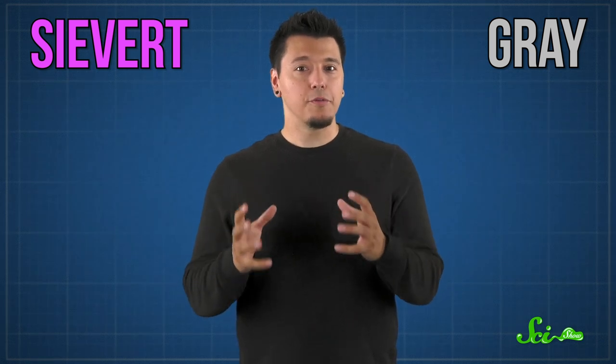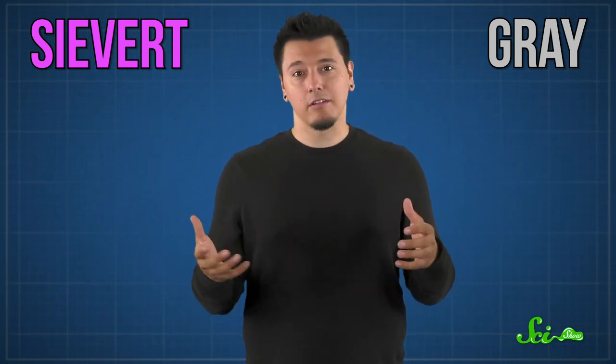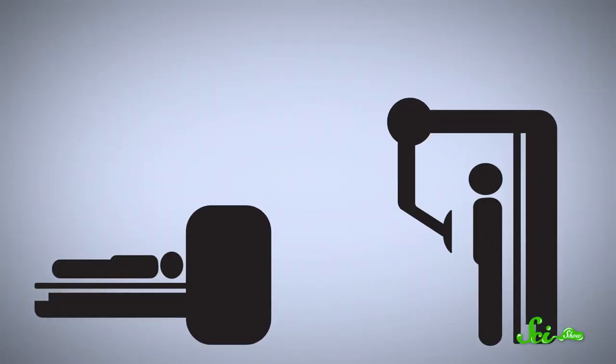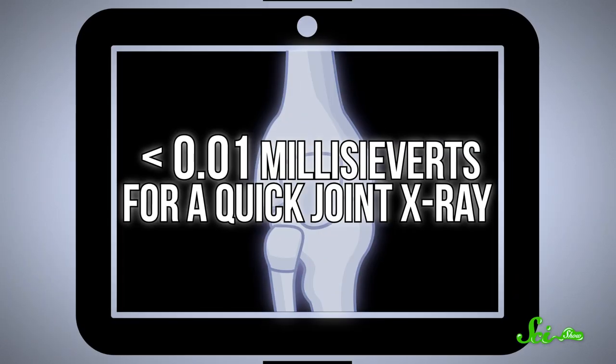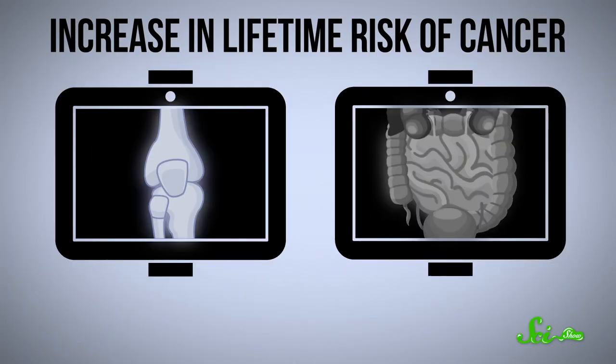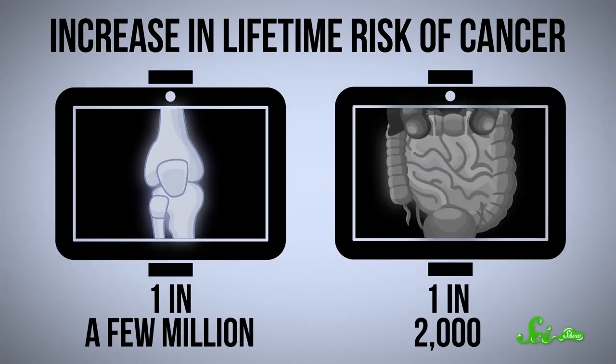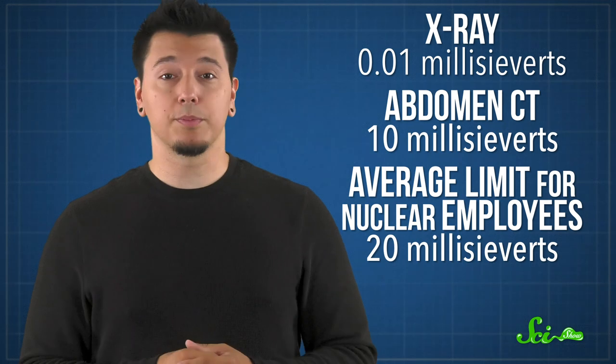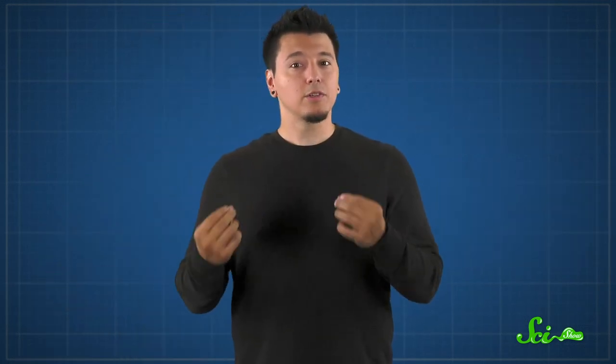The sievert and the gray are the only units you need to remember to understand the overall impact of radiation exposure and make informed decisions about how you travel, receive healthcare, and generally live your life. Because the truth is, there are a lot of sources of radiation, including natural ones, and everyone is constantly exposed to some of it. On average, people are exposed to a few millisieverts per year from their everyday lives. The amount from medical scans varies — from less than 0.01 millisieverts for a quick joint x-ray, to about 10 millisieverts for a full abdomen CT. These raise your lifetime risk of cancer by 1 in a few million to 1 in 2,000, respectively. And to put all that in perspective, the allowed limit for the average nuclear industry employee is 20 millisieverts per year. While radiation exposure can be bad, it's also something that happens to us every day.